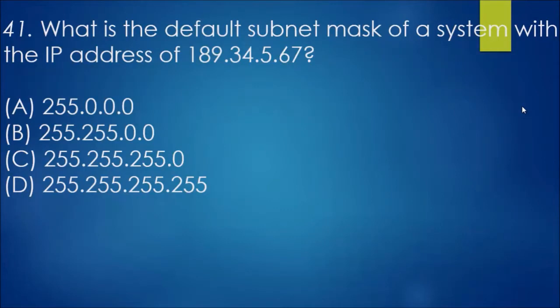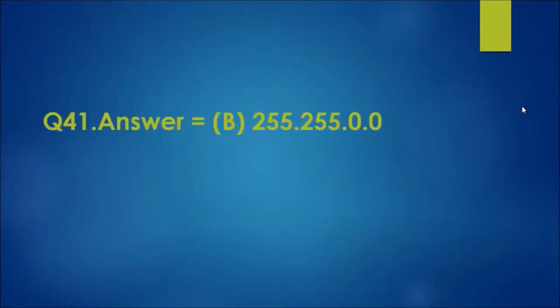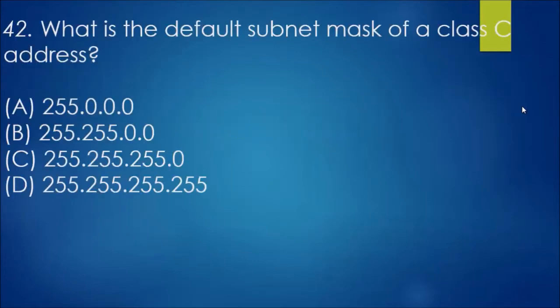Question 41: what is the default subnet mask of a system with the IP address of 189.34.5.67? In this instance, the number is 189, so that is past the first lot of octets, which makes it a class B. A class B in terms of subnet masks means that there's two 255s. So the answer will be B, which is two 255s, zero, then zero.